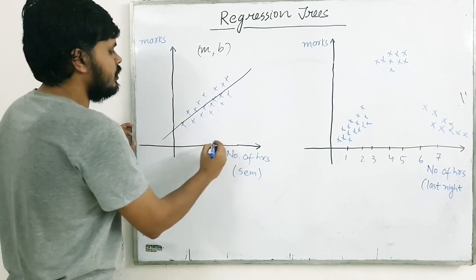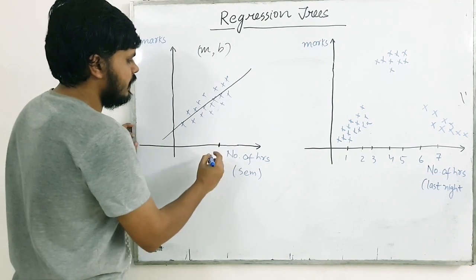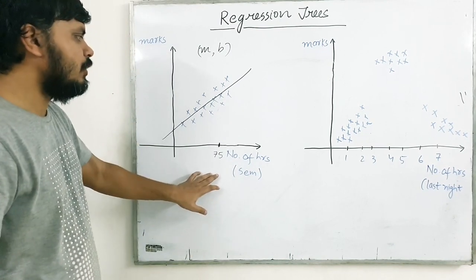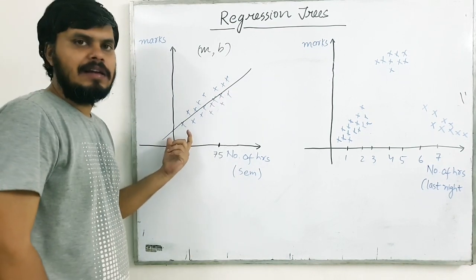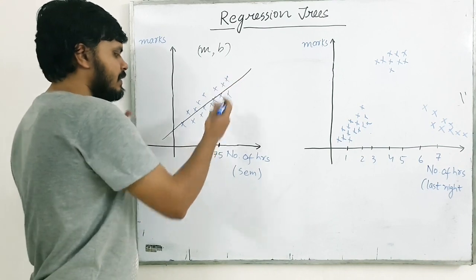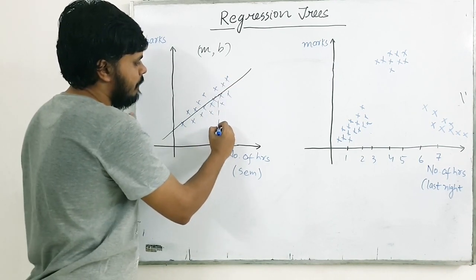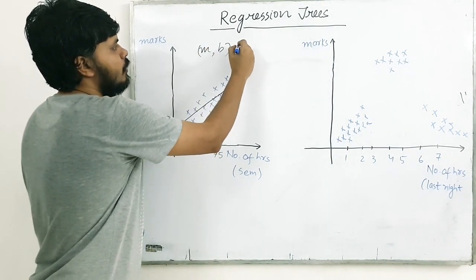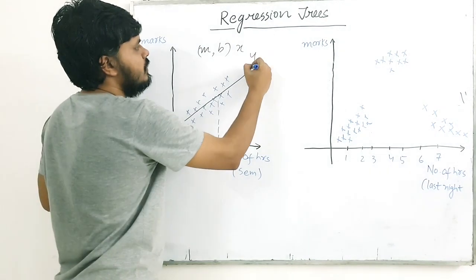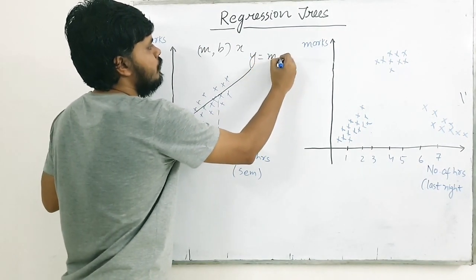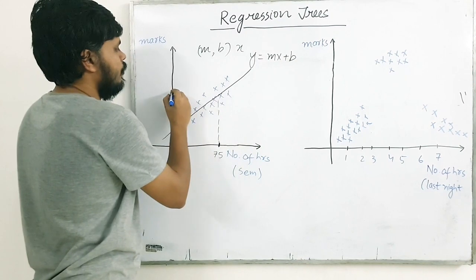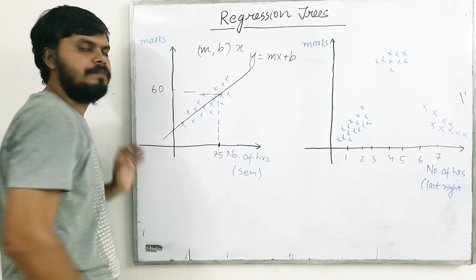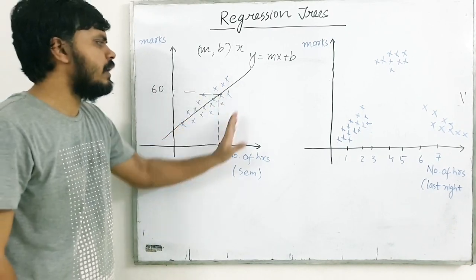So, iske baad, agar koi mujhse poochhe, ki boss, yeh student hai, isne, I don't know, total mein take, 75 hours padhai ki hai. So, what I will do is, now that I have got this linear relationship, I have got this line, what I will do is, I'll plot this point on top of this graph, right? I have m, I have b, I also have my x, so what I can do is, I can find out y, by using this relationship, right? Aur, line se maine mujhe yeh hai, ki uske 60 marks aane hain. Simple, that is how linear regression works.